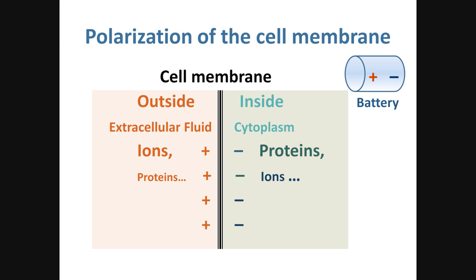Why is that? One of the reasons is the proteins. They are mostly negatively charged and there are many more proteins inside the cell than outside. In a way, it is similar to the electrical battery that you see in the top right corner. There are two poles, positive and negative. We can say that the membrane that separates the charges is polarized. There is plus on one side and minus on the other. Polarization is the usual state of the membrane — negative inside, positive outside, that's all.